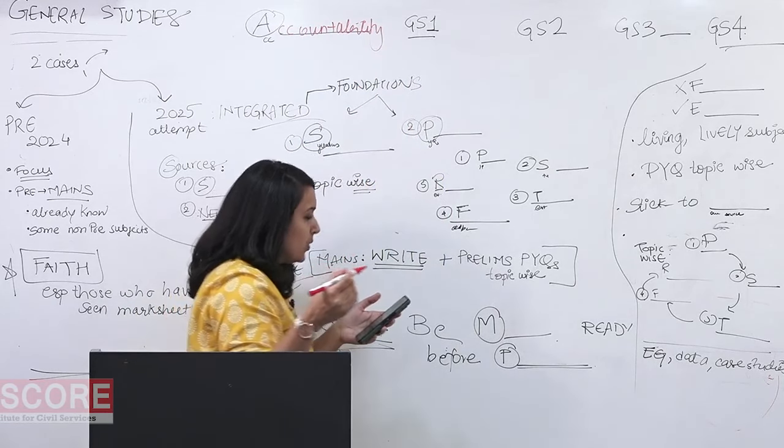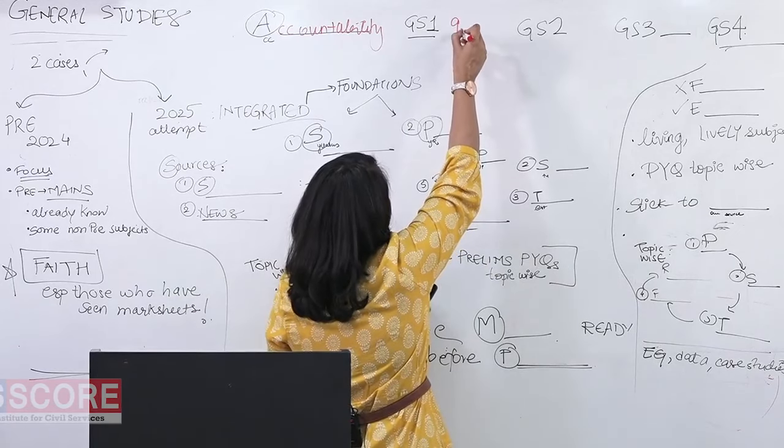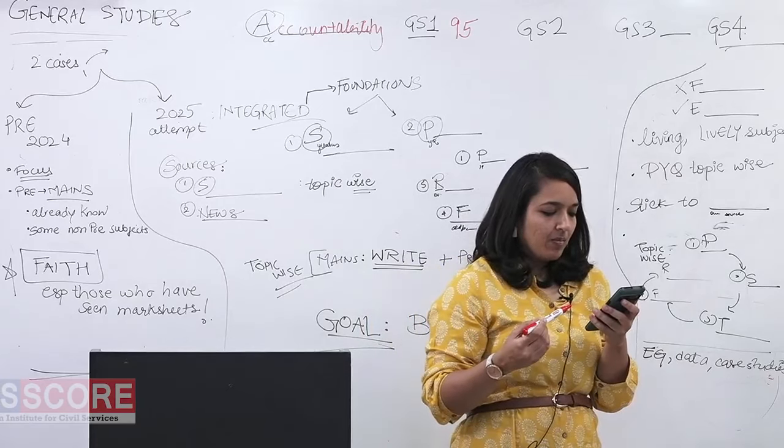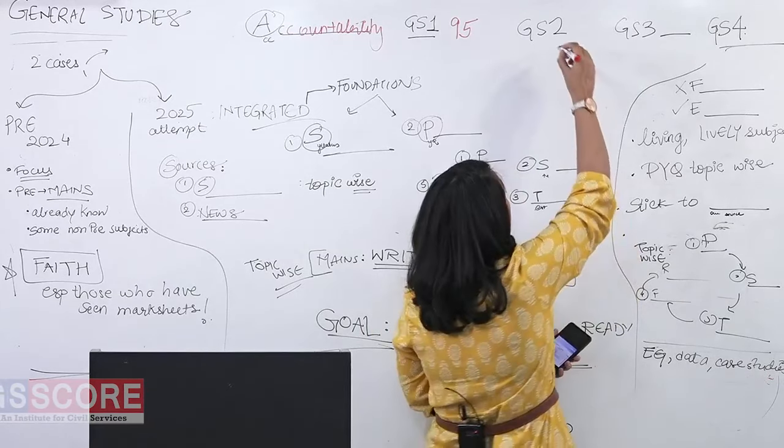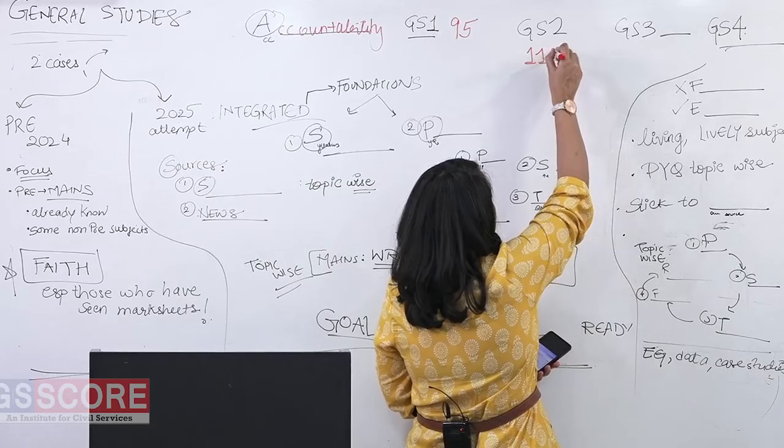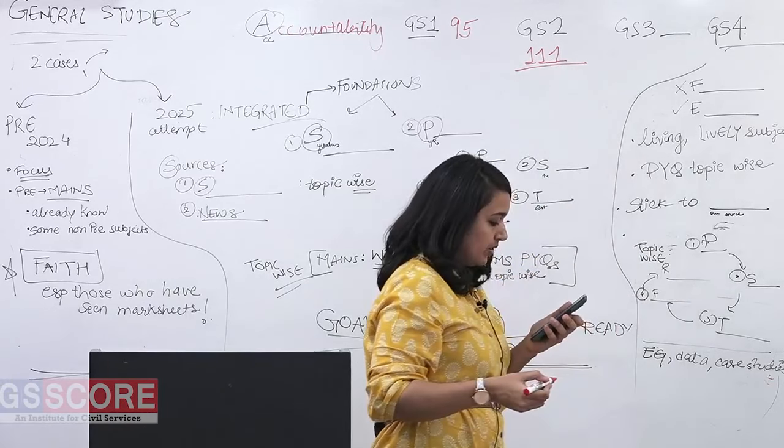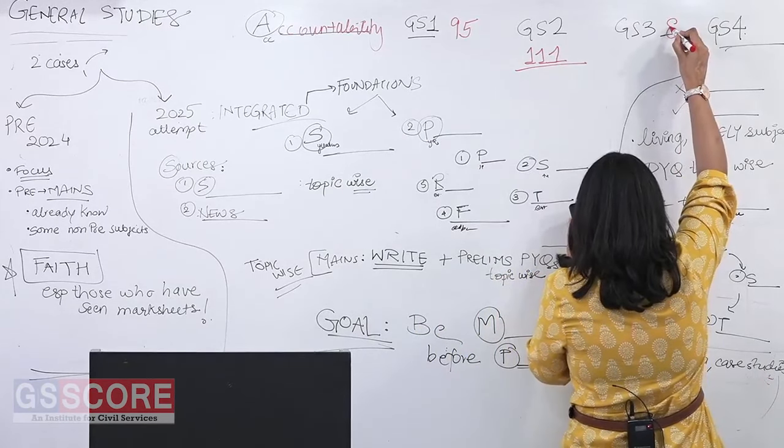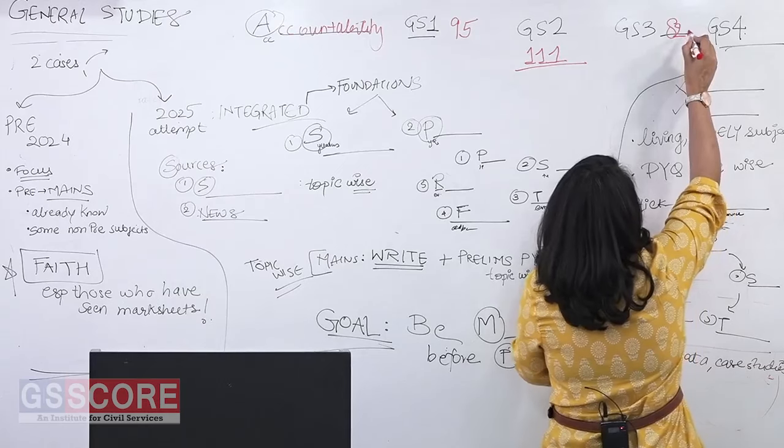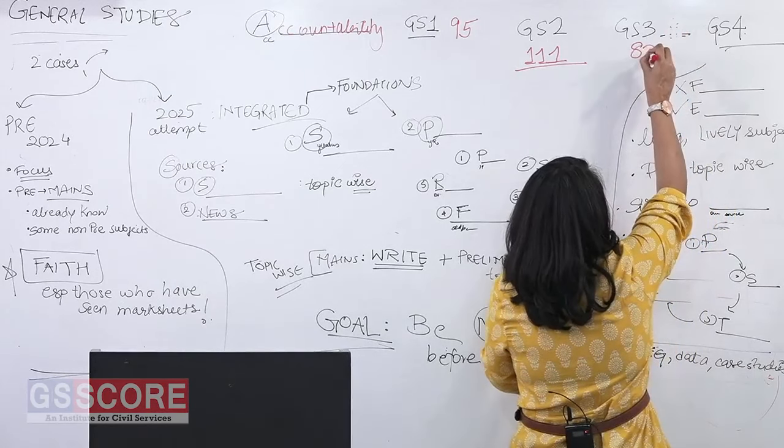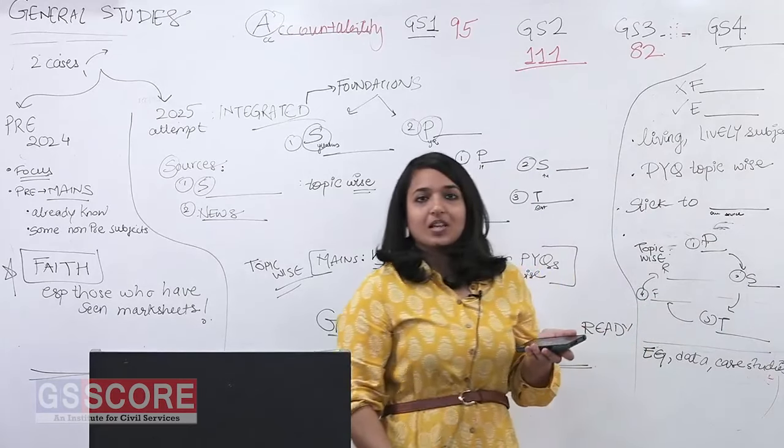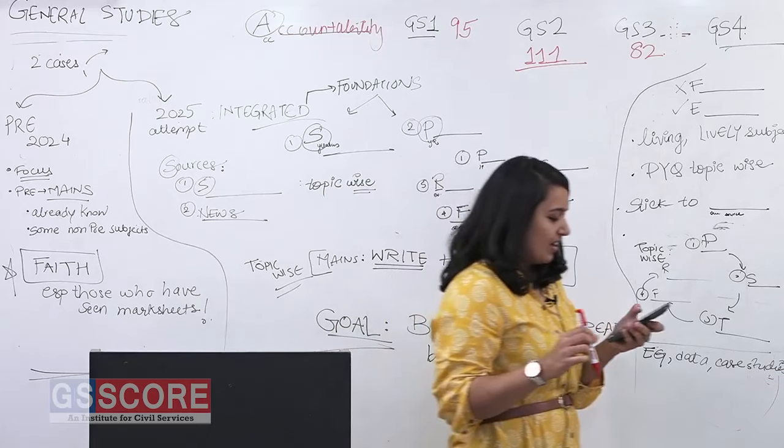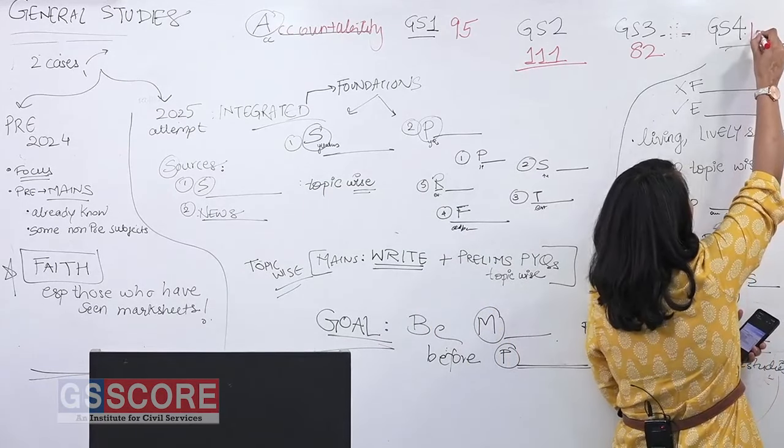My GS marks were GS1, 95. My GS2 marks, and this is a subject I truly enjoy but I didn't perform very well in it, so I'm not too happy. These are my marks, 111. GS3 I'm not very happy for sure, I got 82 marks. And in GS4, it's a subject I really enjoy just like GS2 and my optional public administration. For GS4, I got 127.